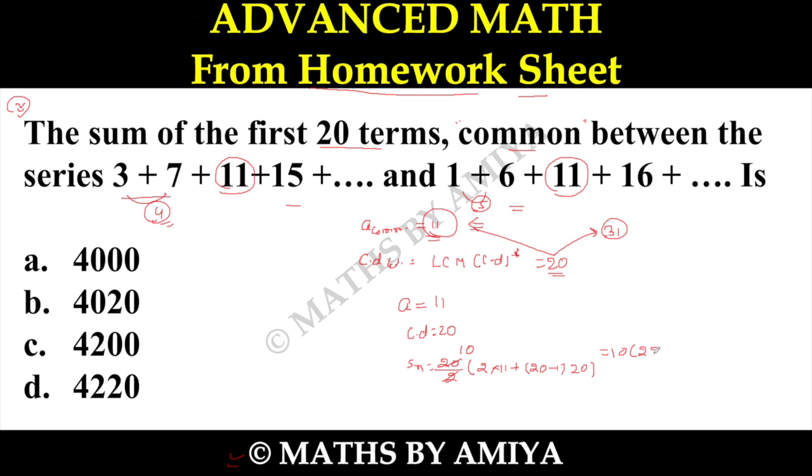So we have 10 into 22 and 19 into your 380 so this one is nothing but 10 and this one is nothing but 402 so the total summation is nothing but 4020 so answer of this question is 4020 I hope this one is clear.